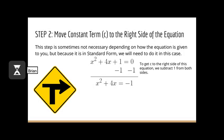The next step for completing the square is to move the constant term c to the right side of the equation. This step is sometimes not necessary depending on how the equation is given, but because ours was in standard form, we need to do it. We have x squared plus 4x plus 1 equals zero. The constant term is positive 1, so we subtract 1 from both sides, leaving us with x squared plus 4x equals negative 1.